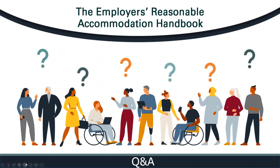Another question: Are we required to accommodate a person who needs prescribed narcotic painkillers or medical marijuana? You would go through the interactive process as you would with any request you receive. If the disability is not obvious, you are permitted to ask the employee for documentation to verify the disability and the need for the accommodation. If a person has a disability that qualifies under the ADA, you would go through the interactive process to identify what accommodation ideas are available that are effective, and choose which one to implement.